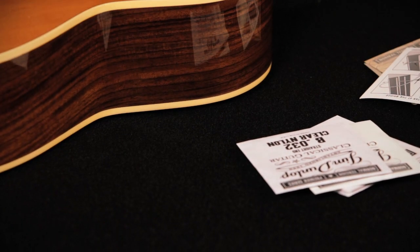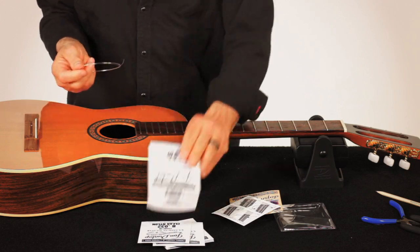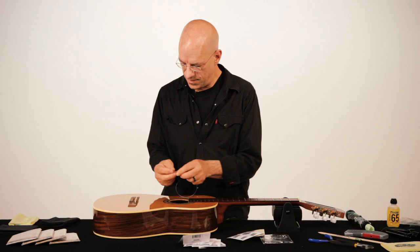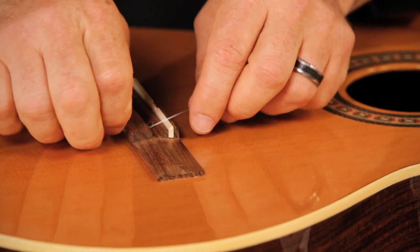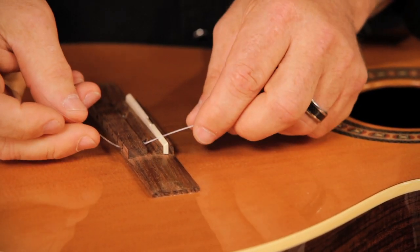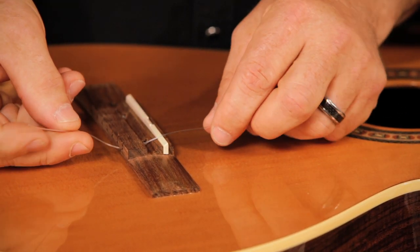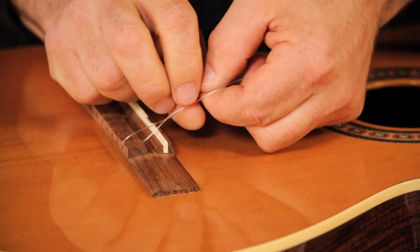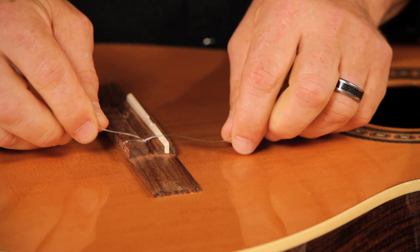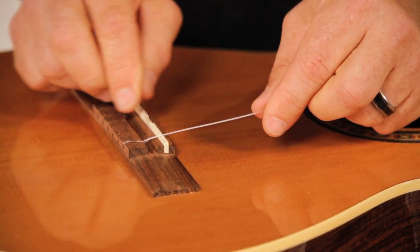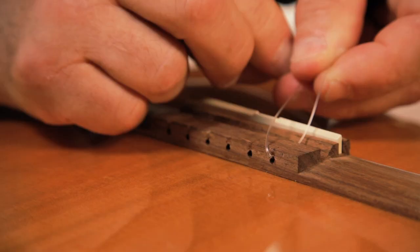The trick with putting on the nylon strings is to keep them from slipping, especially the high E since it's so slippery. One of the tricks you do is you don't tie it in a knot. You have the tail stick out. You bring it back towards the string, and what you're going to do is you're wrapping it around. You can go either way, doesn't matter.